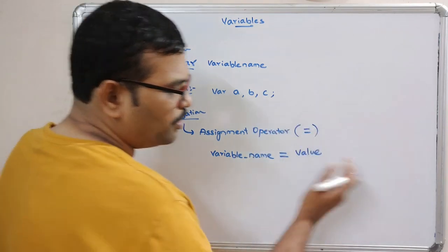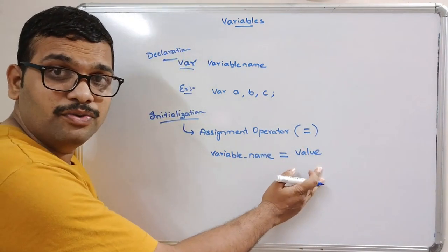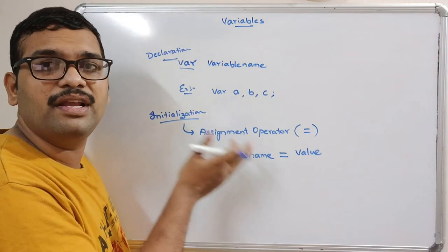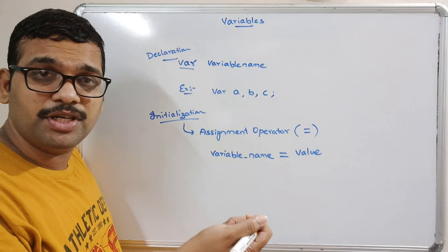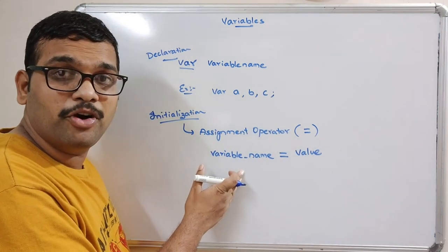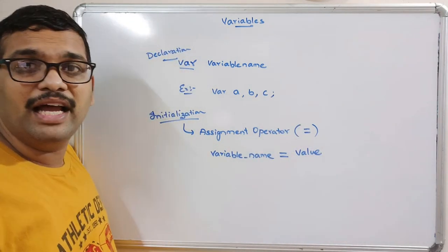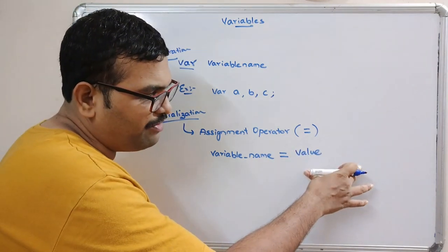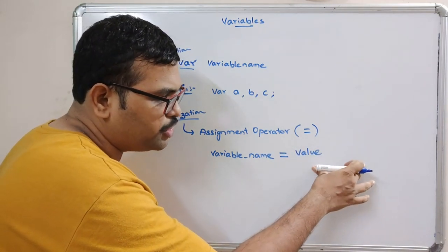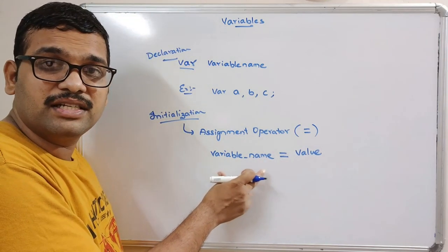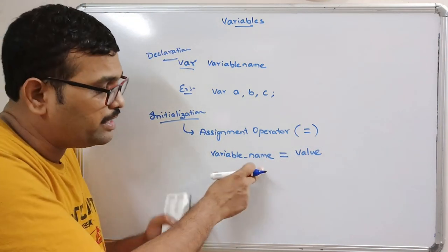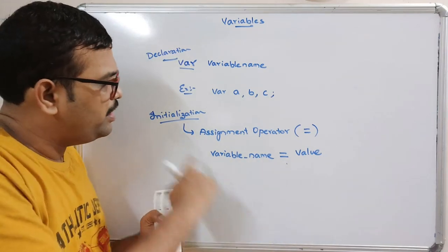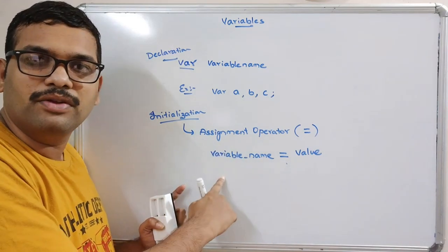On the right-hand side of this assignment operator is the value, and the left-hand side of the assignment operator is the memory location — that's the variable name. If you are using some expression, the left-hand side will be the memory location and the right-hand side will be the expression to be evaluated. That expression will be evaluated and the complete result will be stored in the variable given at the left-hand side of the assignment operator. This is how we assign a value to a variable.